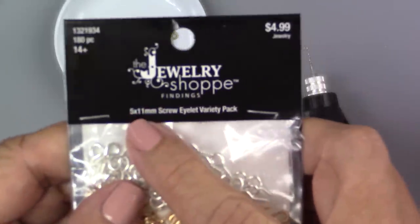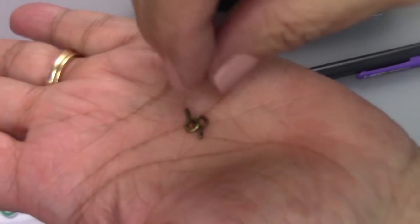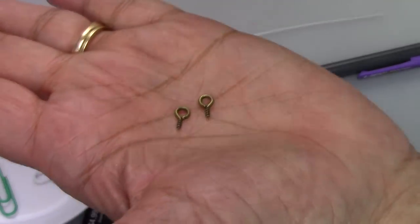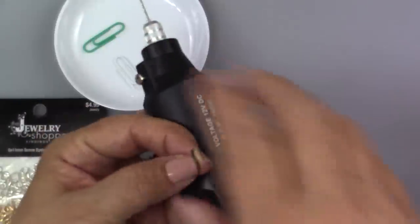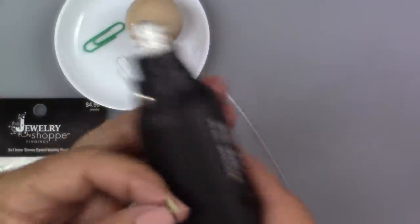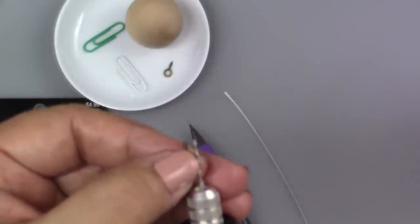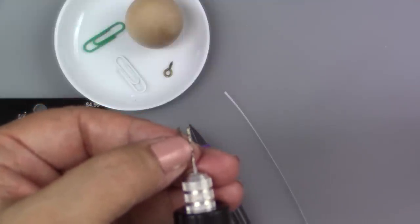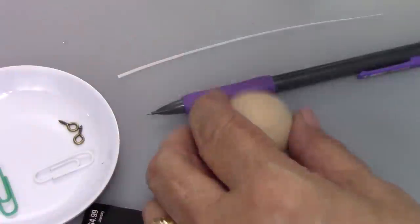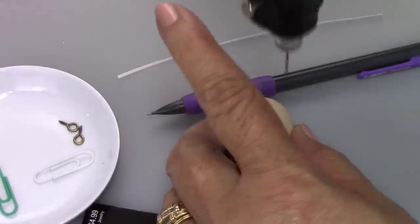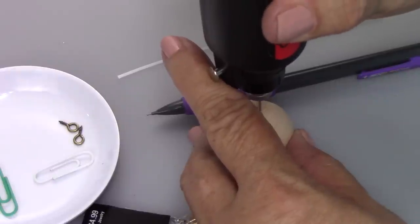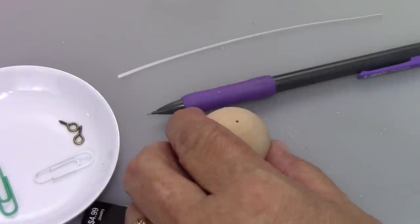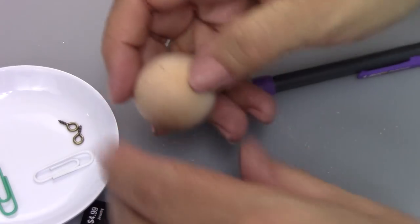I've got my screw eyes from Hobby Lobby. These are 5 by 11 millimeter. I'm going to go ahead and drill a pilot hole. You can try drilling these into the ball, but these are hardwood, and so I found it a little difficult. I'm going to be looking for a drill bit that is actually slightly smaller than the size of the screw because I want to have a tight fit. I may also put a little dab of glue.